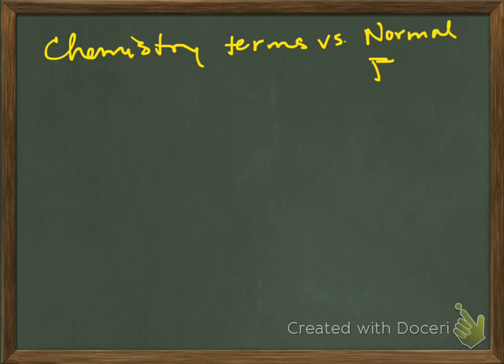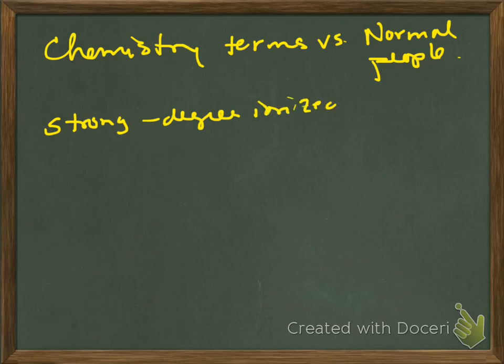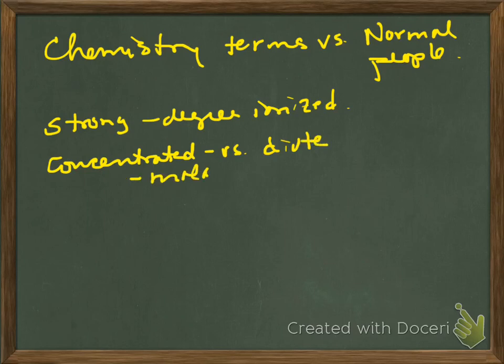All right, so, sidetracked a little bit into complex ion. So, let's look at chemistry terms. Okay, so chemistry terms versus normal people. Okay, strong acids and bases really has to do with the degree in which it's ionized. Concentrated versus dilute really is the molarity or the concentration of the solution.